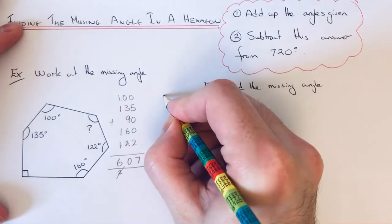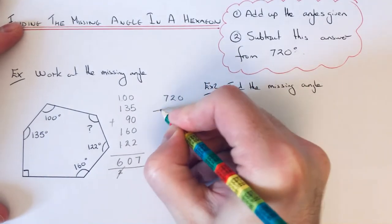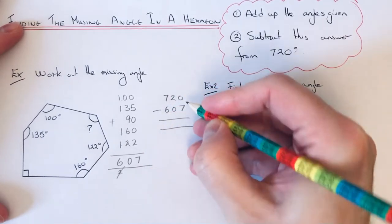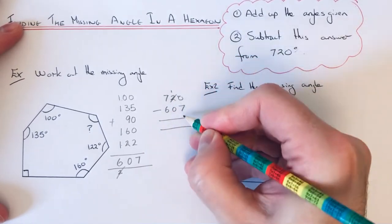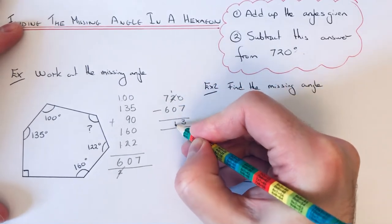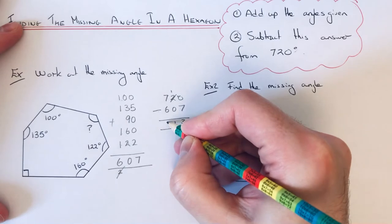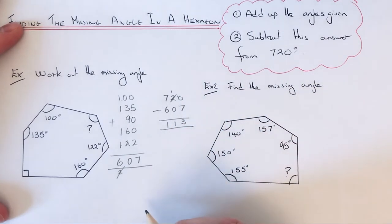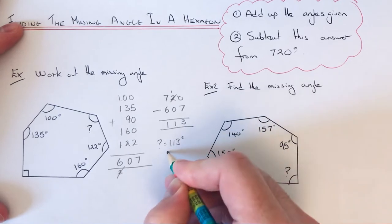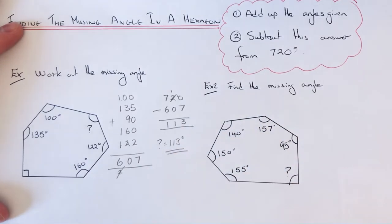10 take away 7 is 3. 1 take away nothing is 1. 7 take away 6 is 1. So our missing angle is 113 degrees.